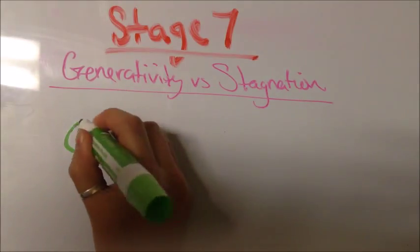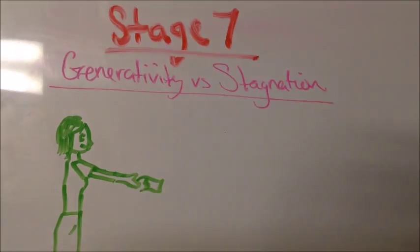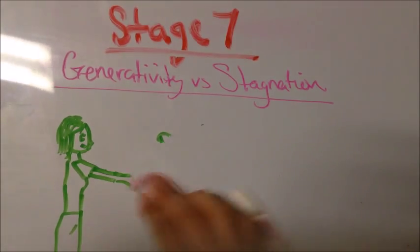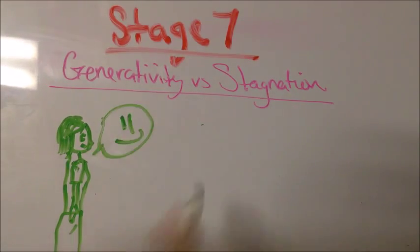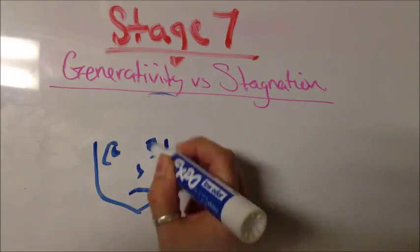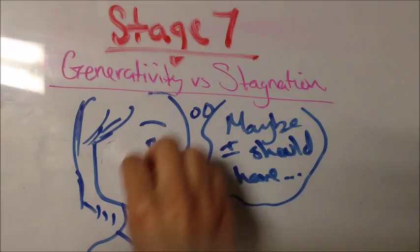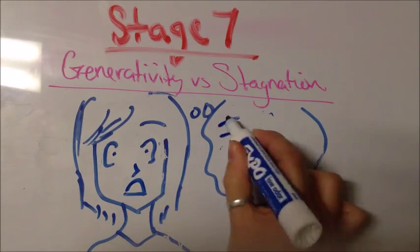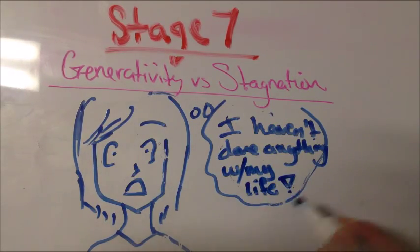Stage 7, Generativity versus Stagnation. This stage occurs in middle-aged people. People who have made contributions to their society feel a sense of accomplishment and generativity. Those who are unwilling to help their society develop a sense of stagnation over their lack of productivity. It is at this stage as well when some people have a midlife crisis.